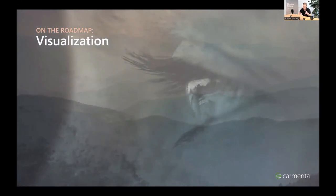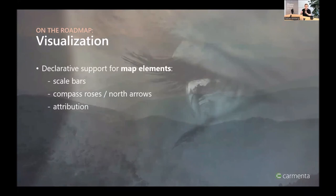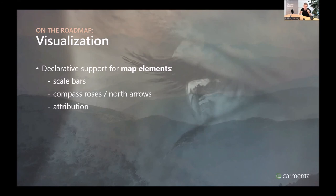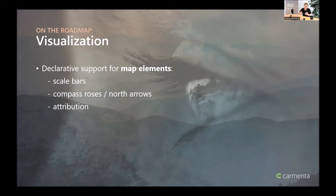On the visualization side, we're adding support for map elements — a new concept replacing the old screen layer. Map elements will include predefined components for scale bars, compass roses, north arrows, and attribution texts, as well as the ability to implement custom map elements. This greatly simplifies implementing these very common use cases in your application.